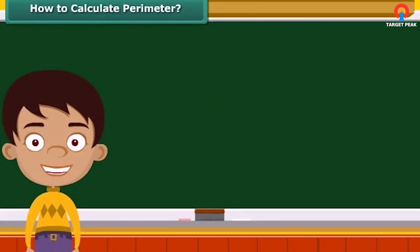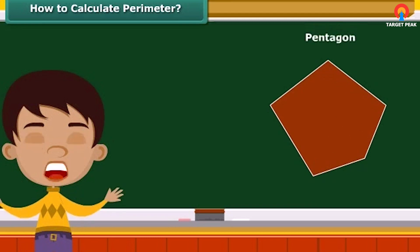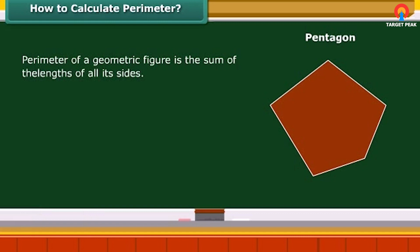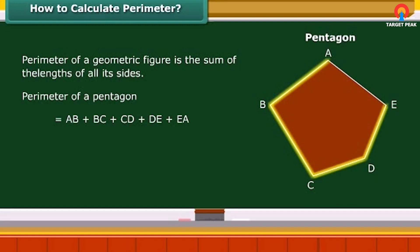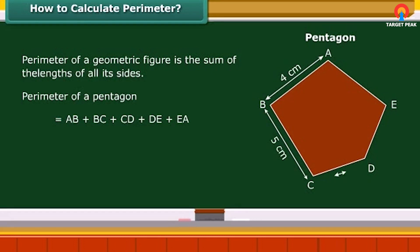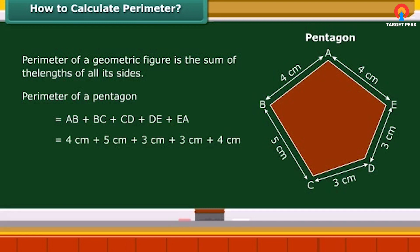Now that you have understood what perimeter stands for, let us try to calculate the perimeter of a pentagon. The perimeter of a geometric figure is the sum of the lengths of its sides. A pentagon is a closed geometric figure of five sides. Suppose the lengths of the five sides AB, BC, CD, DE, and EA are: AB = 4 cm, BC = 5 cm, CD = 3 cm, DE = 3 cm, and EA = 4 cm. The perimeter of the pentagon is 4 + 5 + 3 + 3 + 4 = 19 centimeters.